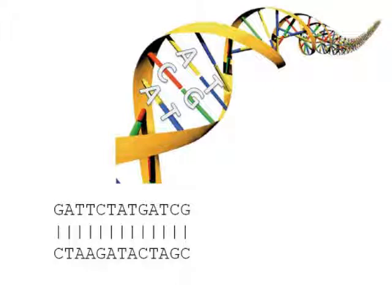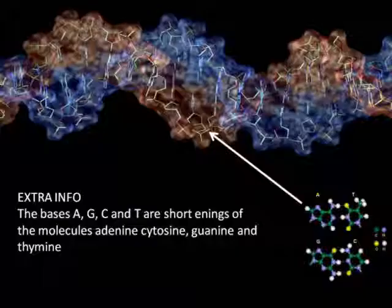Extra information. This is what a DNA molecule looks like — a very complicated, large molecule. A, G, C and T are short for the molecules adenine, cytosine, guanine, and thymine. They're shown in the bottom right-hand corner of the screen.